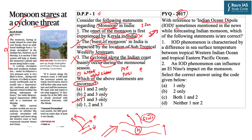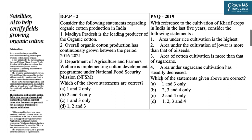The answer to the previous question is B, two only. Moving to the second topic: 'Satellites and Artificial Intelligence to Help Certify Fields Growing Organic Cotton.' Organic farming has gained a lot of significance in recent times, not only in India but across the world. Agriculture is one of the favorite areas when it comes to the UPSC prelims examination.